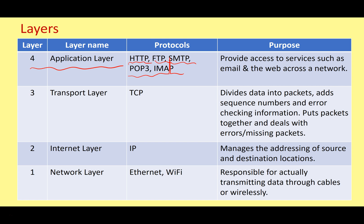Underneath that, we've got the transport layer. The transport layer doesn't really care about the software we're using or what kind of data it is. What it cares about is transporting that data from one place to another — dividing data into packets, adding sequence numbers and error checking information. At the other end, it puts the packets back together again and deals with any errors, corrupted data, or missing packets. That's TCP, or Transport Control Protocol.